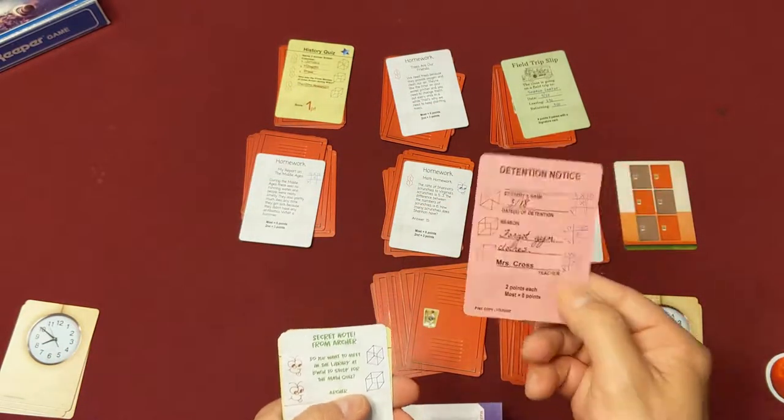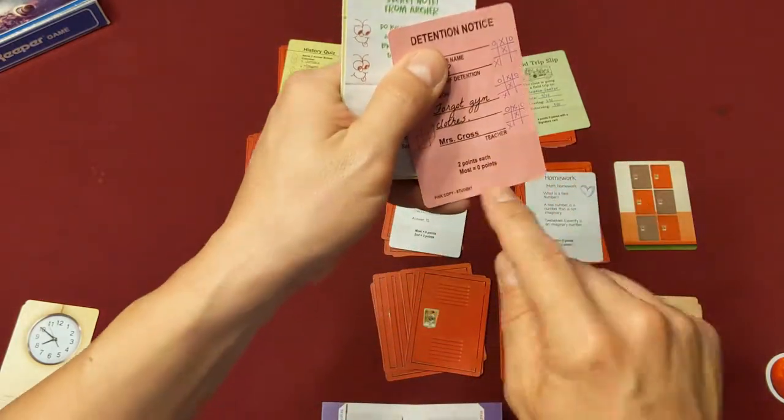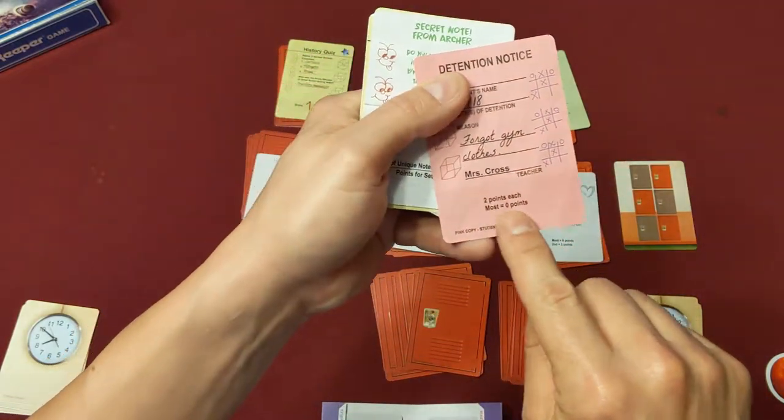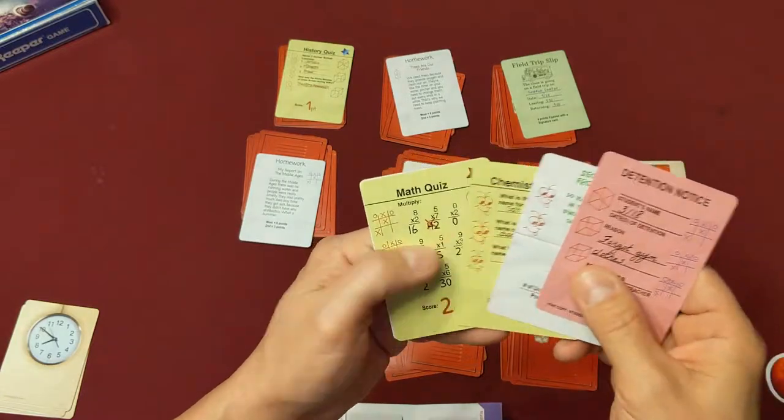Again, detention: if you have the most of these you're getting zero points. Again, each of the cards has little notes at the bottom here that show you kind of what to expect in the game and how the scoring works.